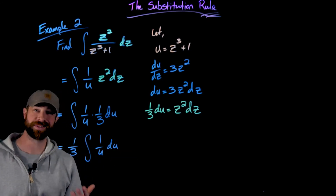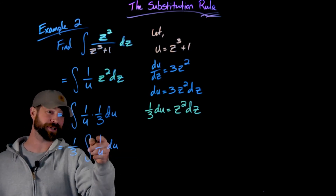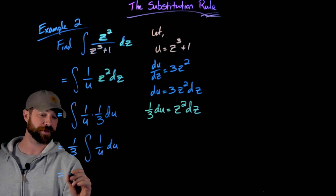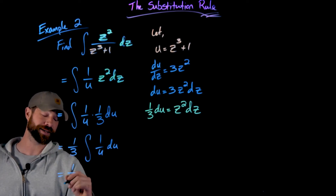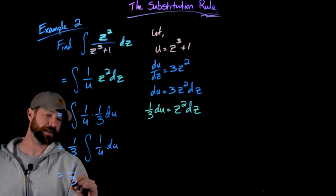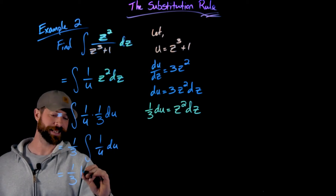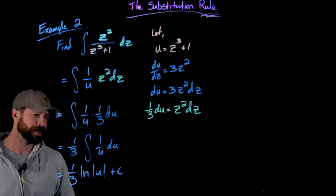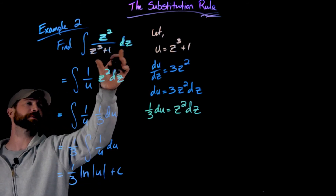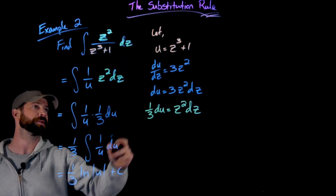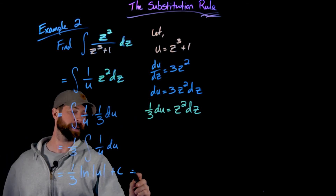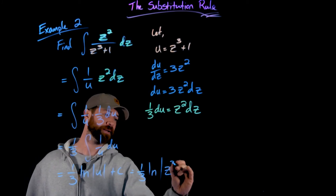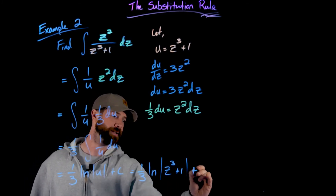Now it's super easy — we have an integral entirely in terms of u with respect to u. The anti-derivative of 1 over u is the natural log of the absolute value of u. So I get one-third times the natural log of the absolute value of u plus c. As always, the final step is to answer in terms of the original variable, replacing u with z cubed plus 1, giving one-third times the natural log of the absolute value of z cubed plus 1 plus c.